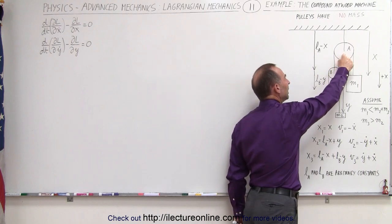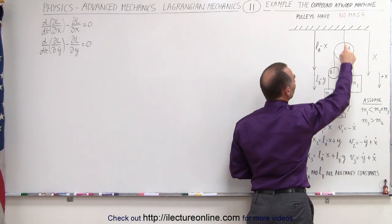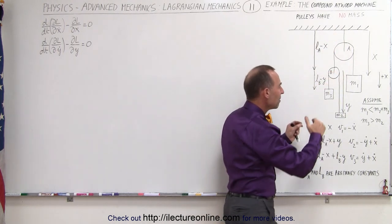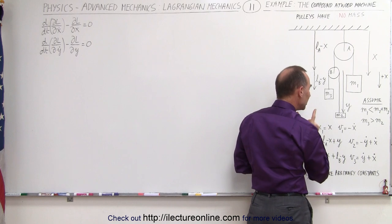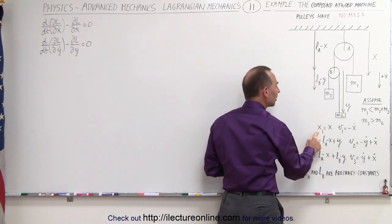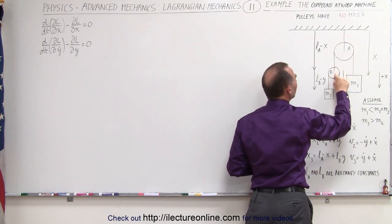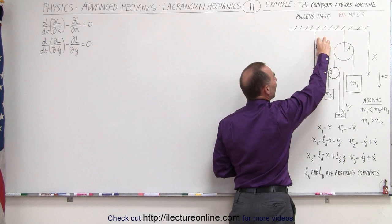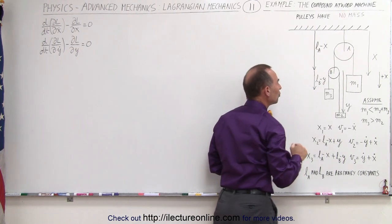Notice that pulley A and pulley B have no mass. The distance to M1 we'll call x1, the distance to M2 we'll call x2, and the distance to M3 we'll call x3. Since M2 and M3 can move independently from M1, we need to set up two coordinate systems — x and y. The distance from the ceiling to M1 is x, and the distance on the other side to pulley B is L_A minus x, where L_A is the rope length for pulley A.